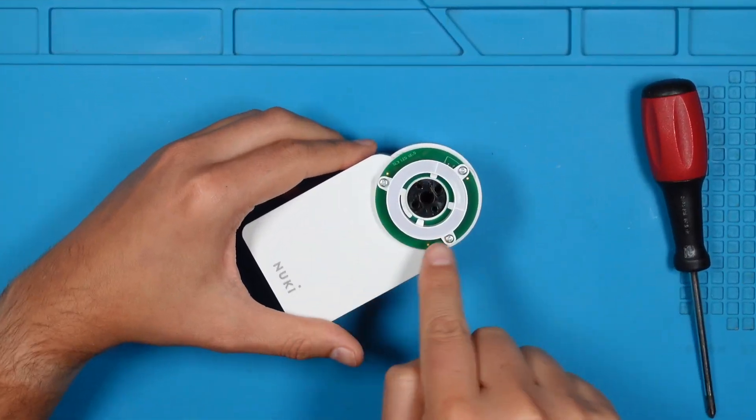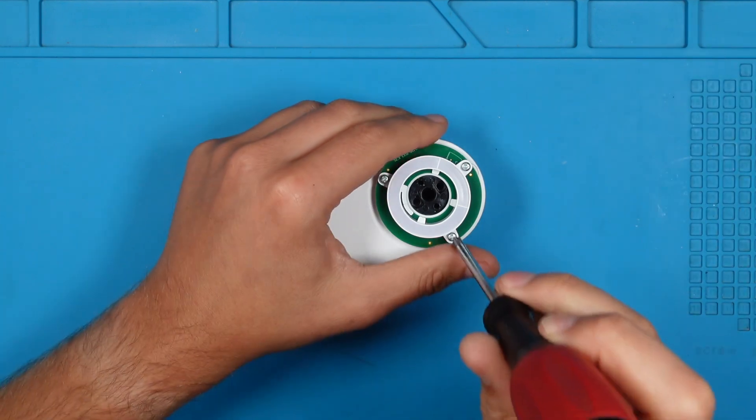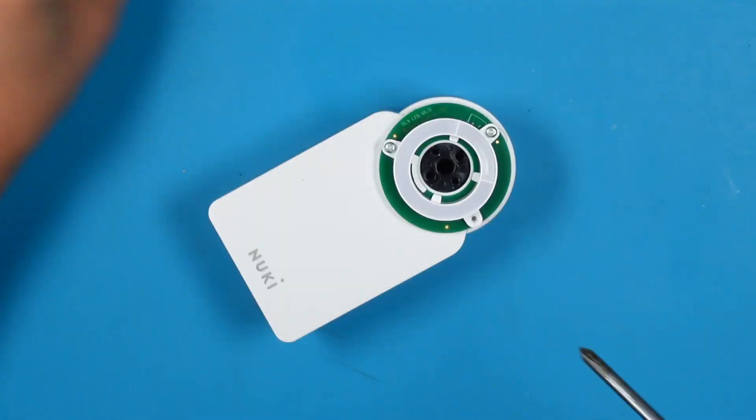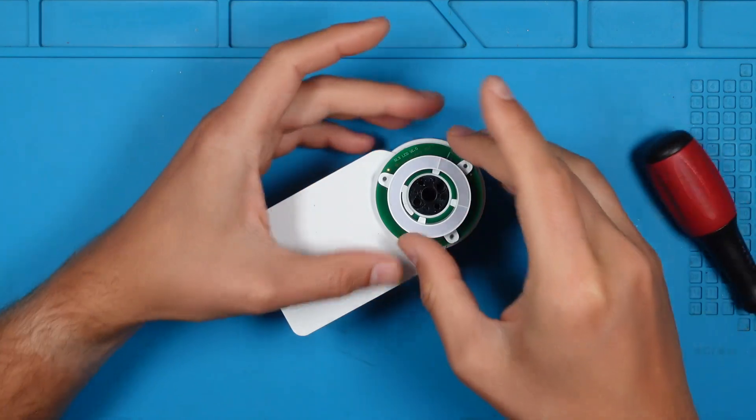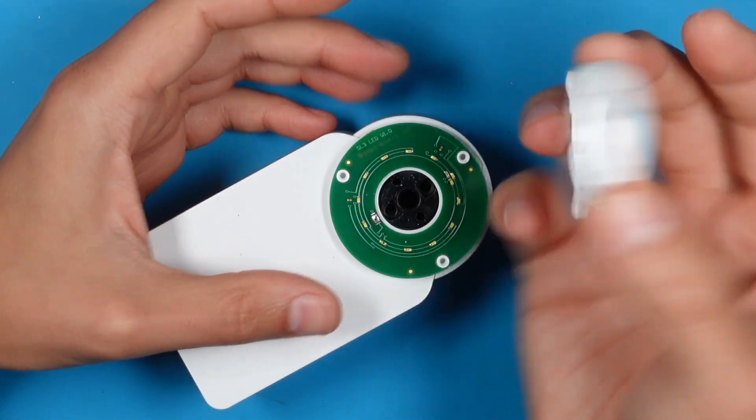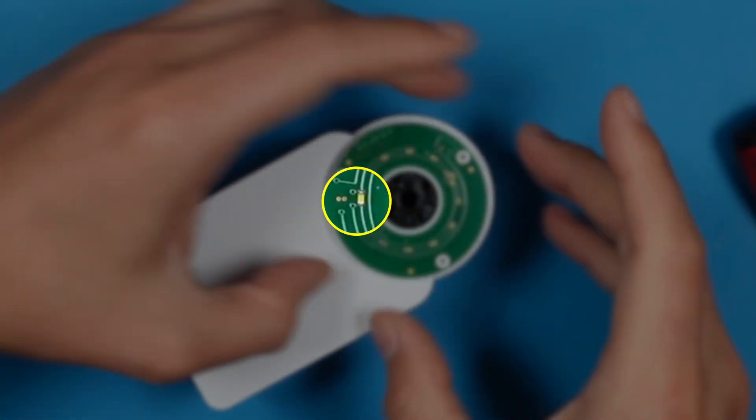Let us poke the screws out of the housing we just loosened. To remove the daughterboard, we need to remove the three screws. Lift the plastic part and we do see the LEDs underneath. Wow, what a rhyme!